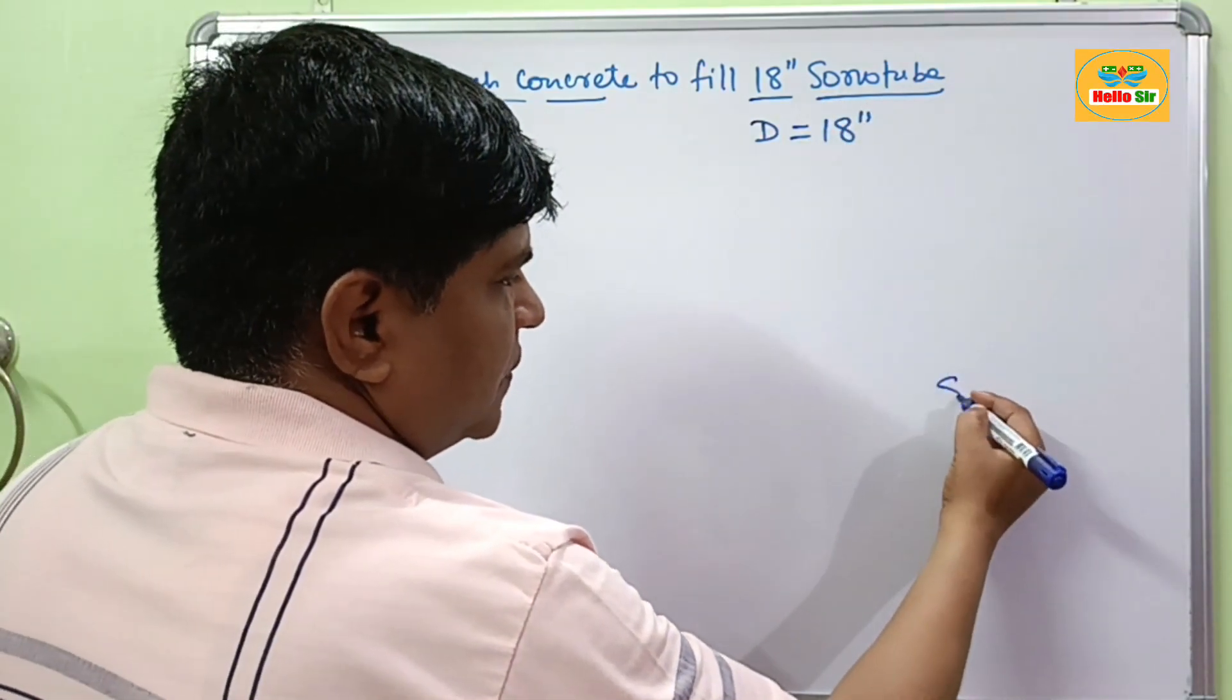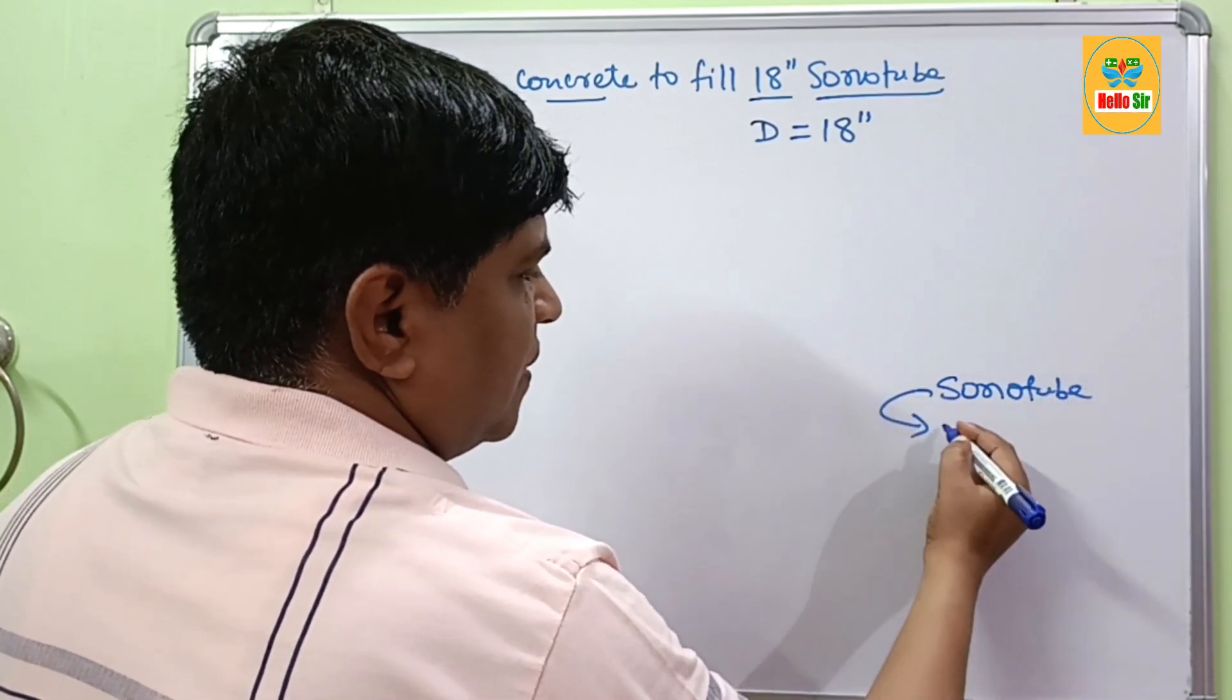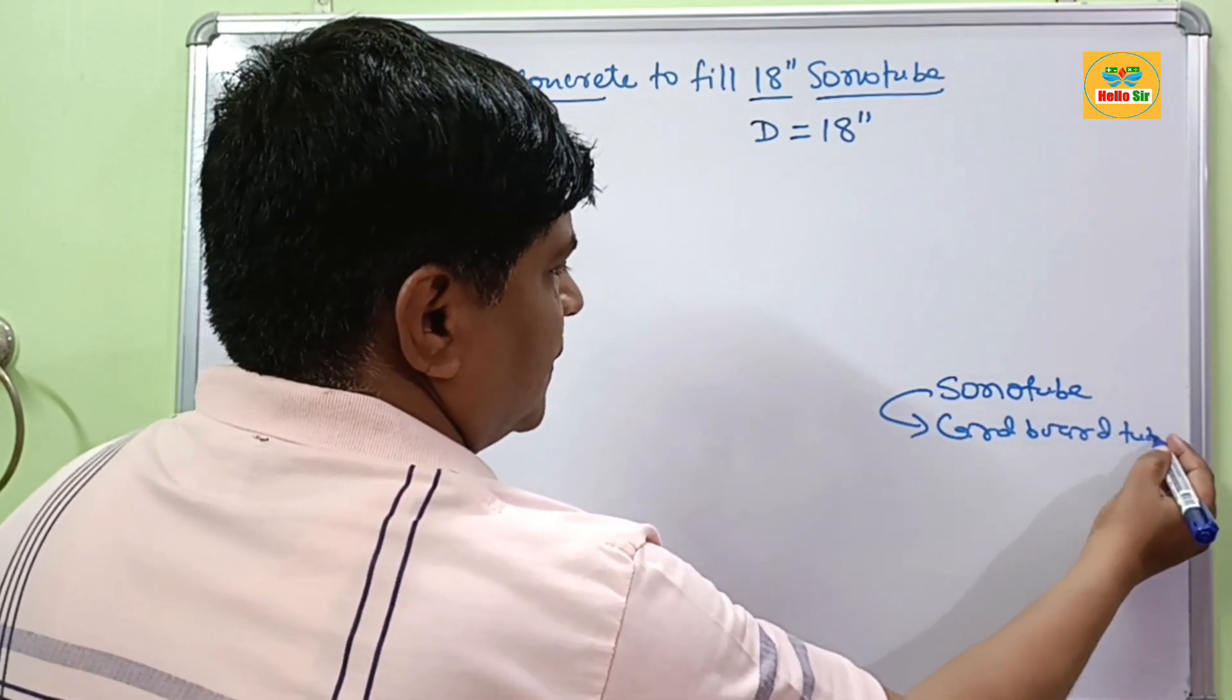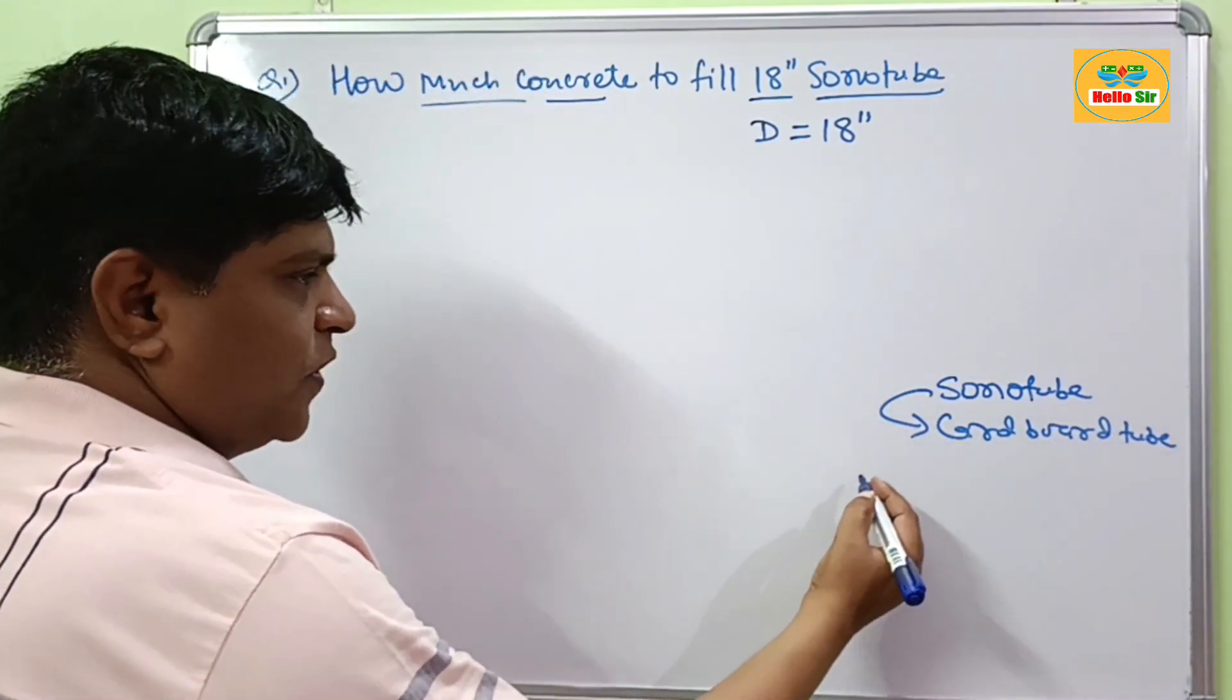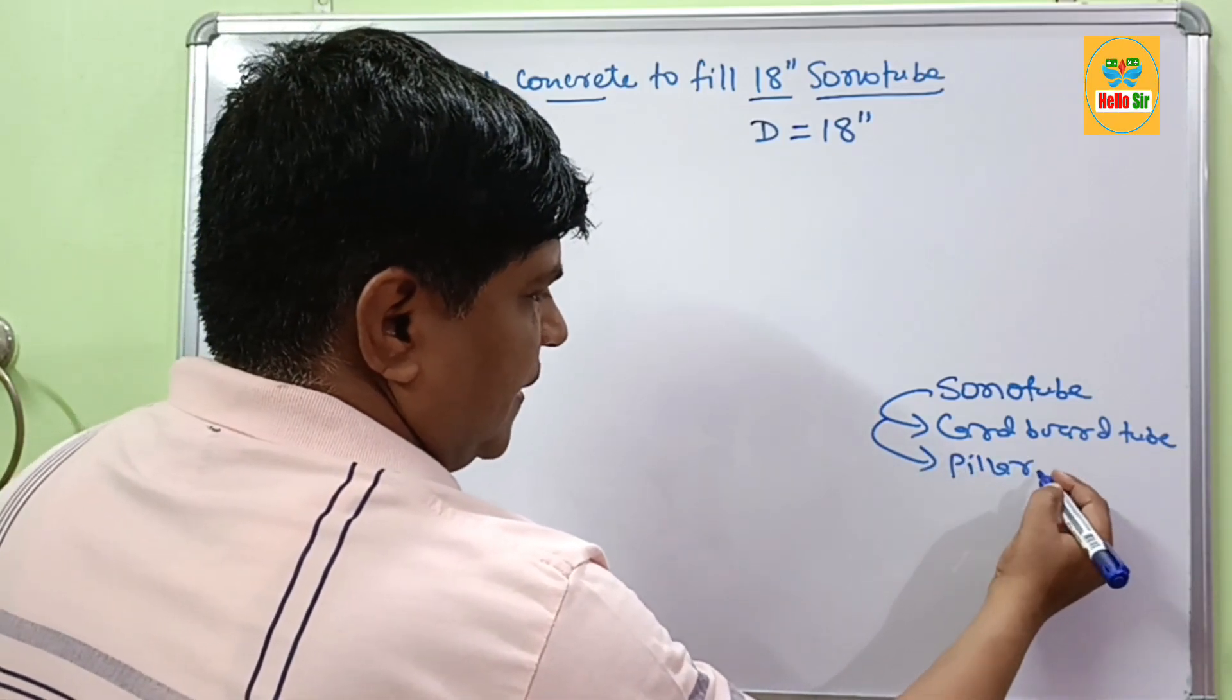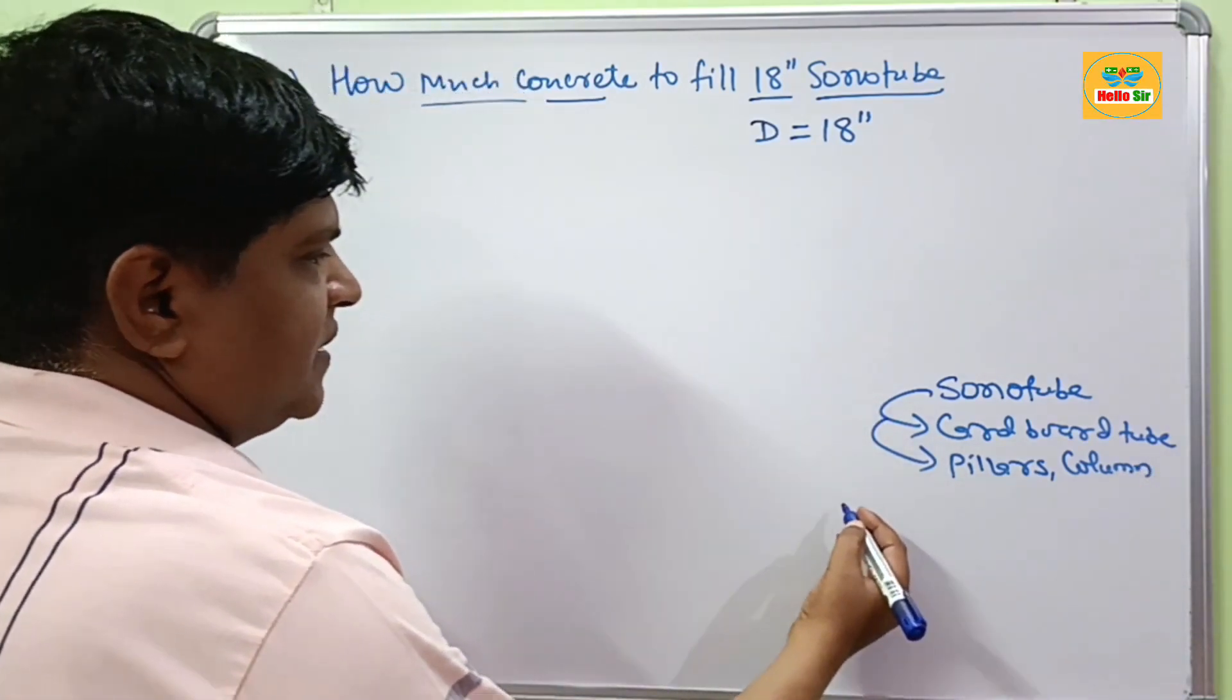First we know about what is sonotubes. It is made of cardboard tube used for pouring concrete to cast pillars, columns, and foundation footings.